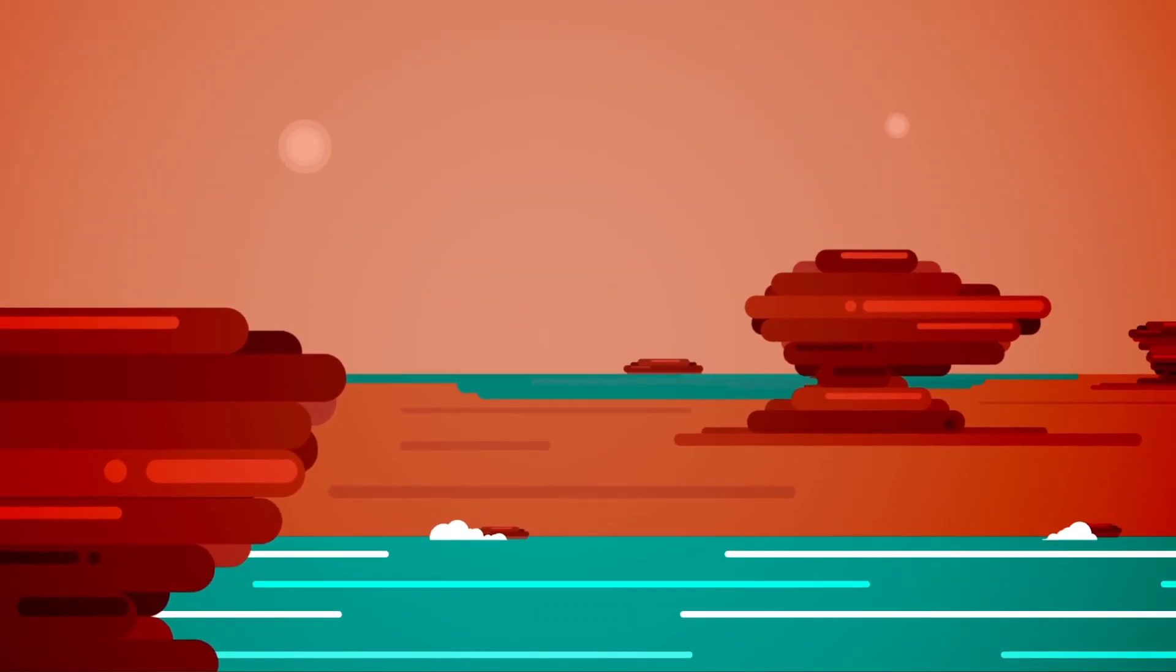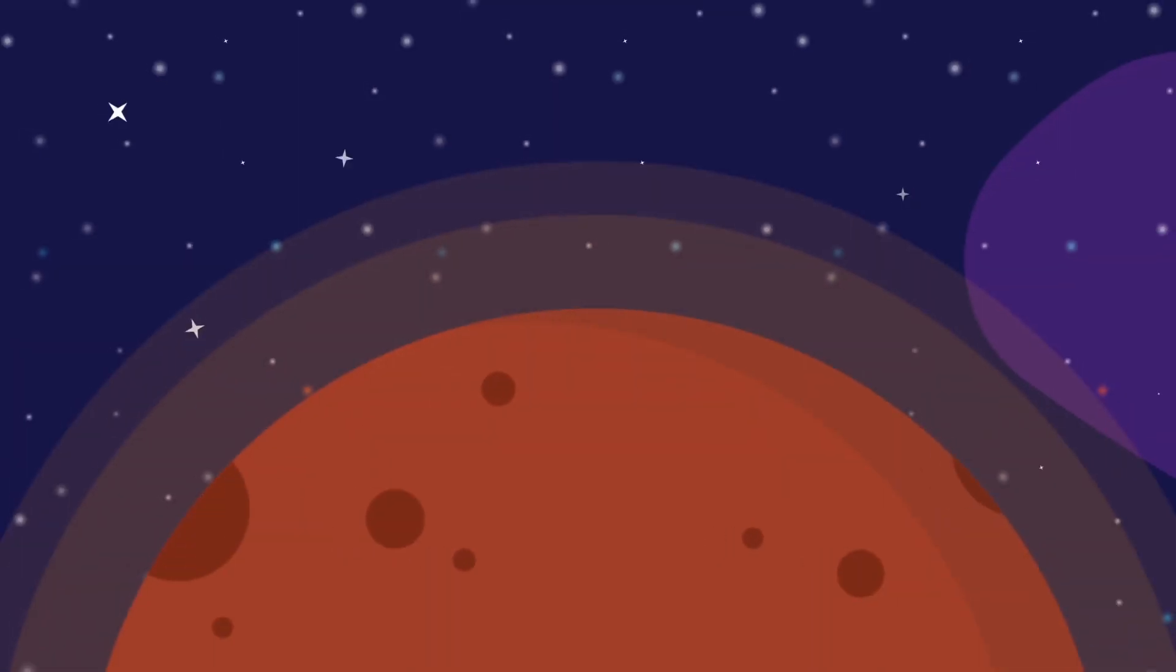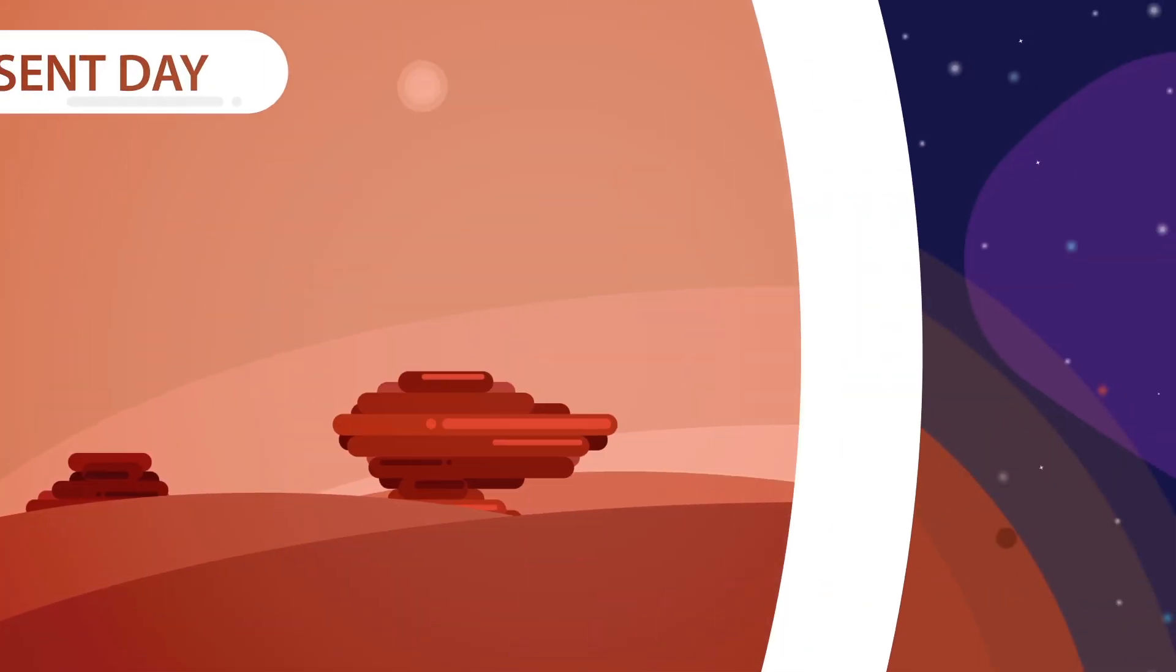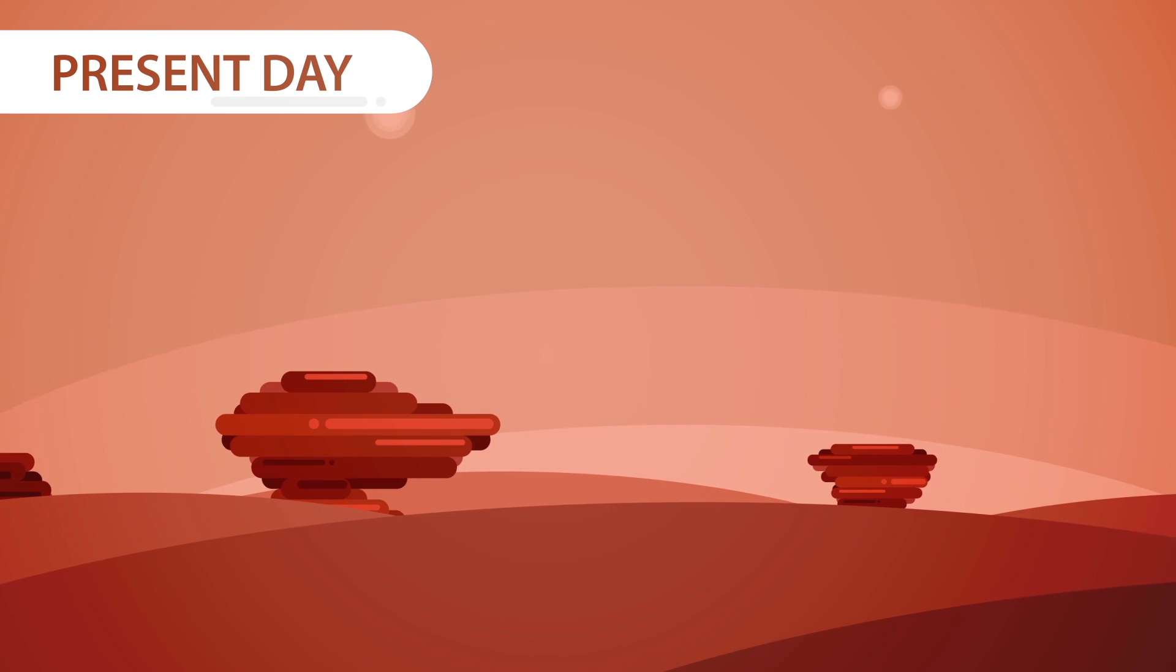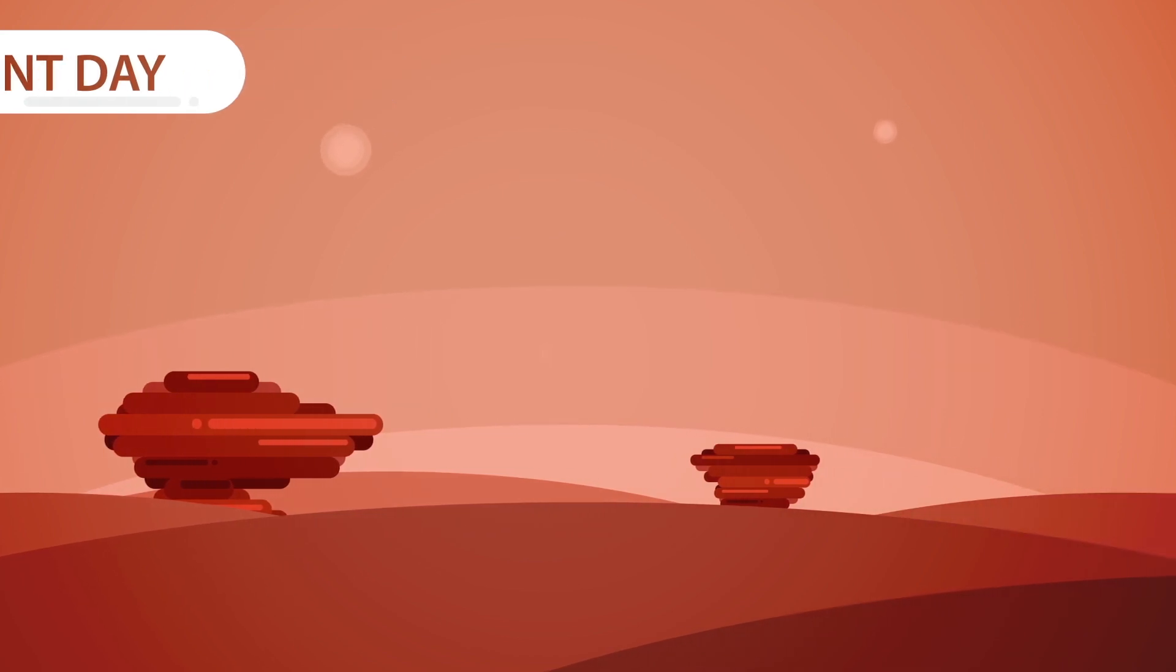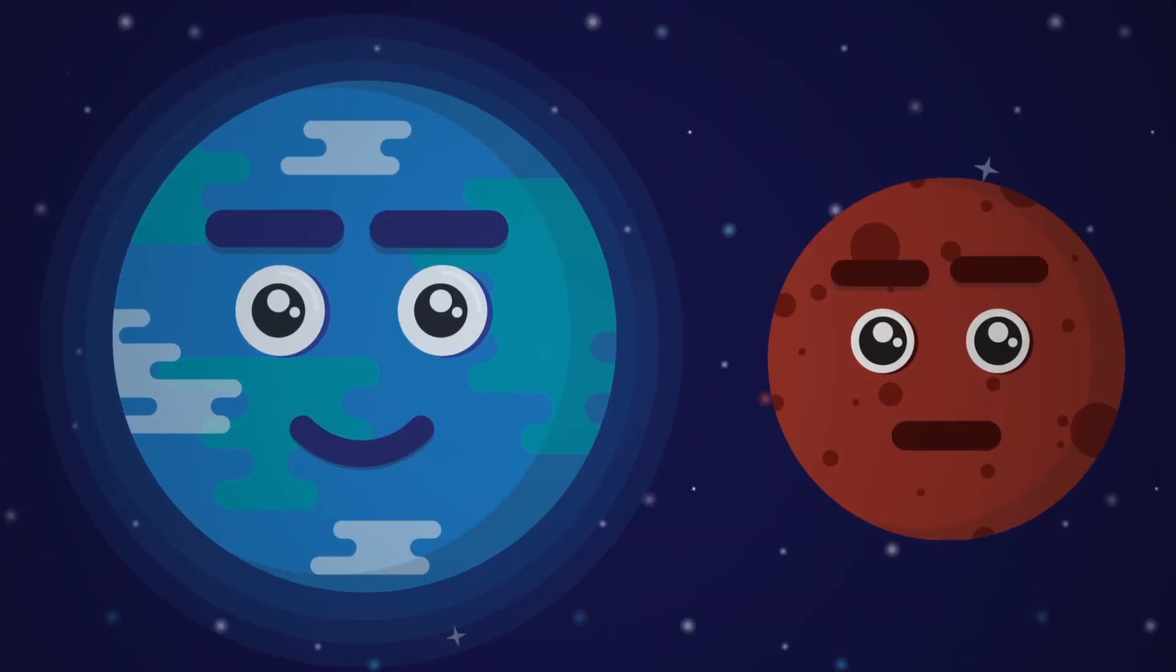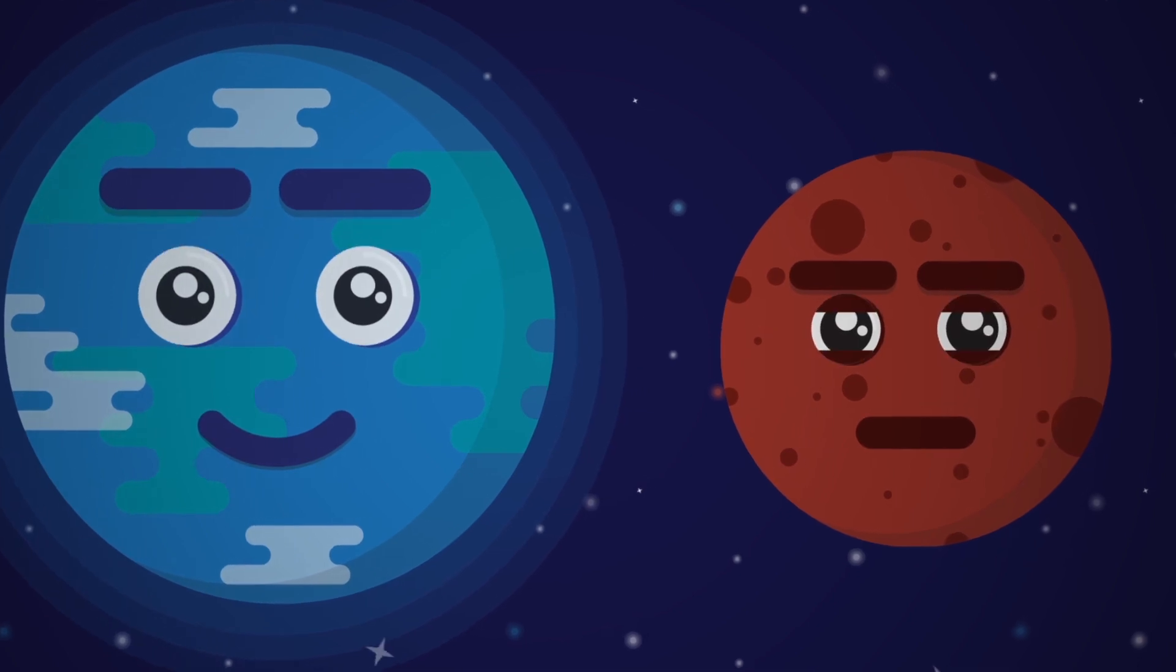It had lakes and streams and a thick atmosphere. But today, the surface of the planet Mars is dry, dusty, rocky, and cold. What made Earth so special and what stopped life from evolving on Mars?